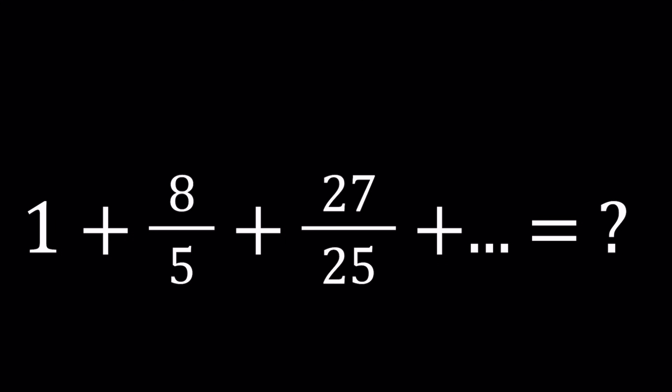We have a sum that looks like this: 1 plus 8 over 5 plus 27 over 25 plus 64 over 125, and so on. This is an infinite sum where the denominators are powers of 5 and the numerators are perfect cubes — 1 cubed, 2 cubed, 3 cubed, 4 cubed.